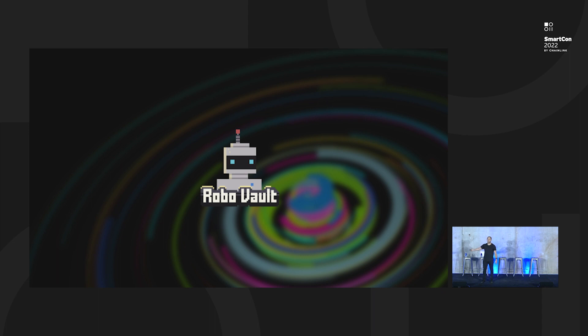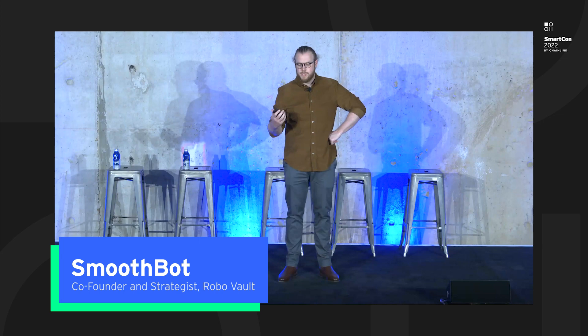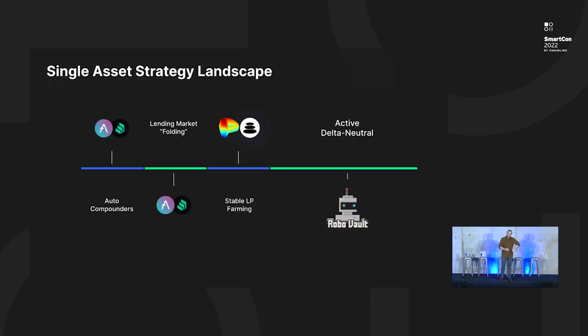I'd like to pass things over to Sam from RoboVault, who's building some really amazing functionality with lots of automation baked in. I'm Sam, CTO of RoboVault. We're a DeFi product on Avalanche, and our goal is to bring automated, advanced delta-neutral strategies to DeFi. Today I'm going to talk about the single asset strategy landscape in DeFi, dig into what we do, how we tackle impermanent loss and hedge it, and the vital role that Chainlink plays in our product.